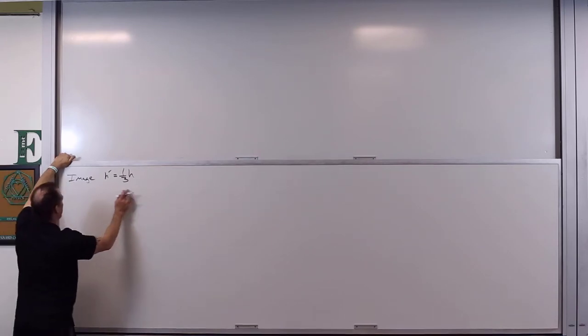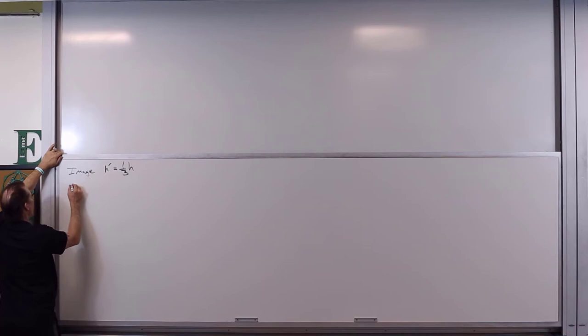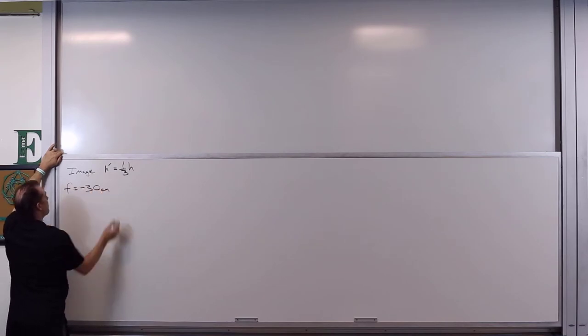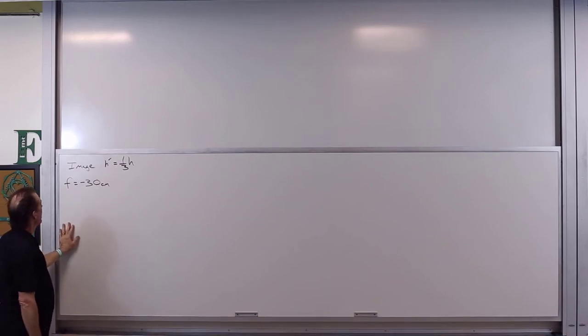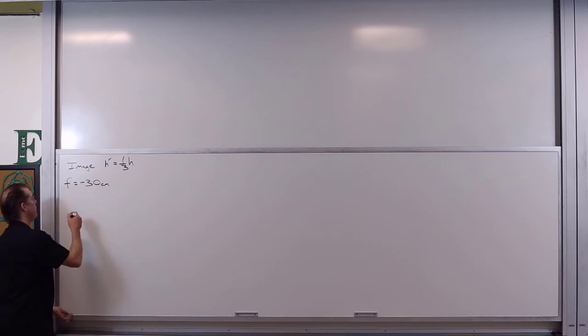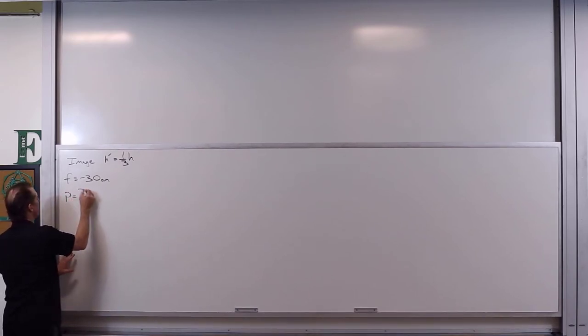So that's kind of what's spelled out there. And we're told that this is a diverging lens that has a focal length of negative thirty centimeters. And we want to know where do we have to put the object in order to make that the case.